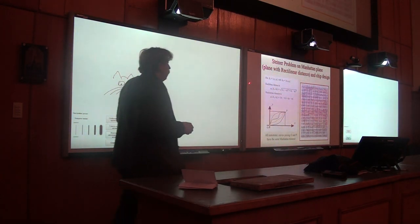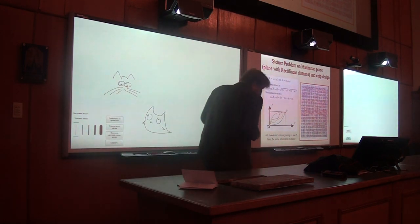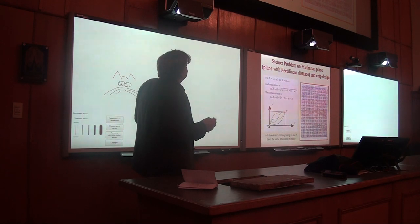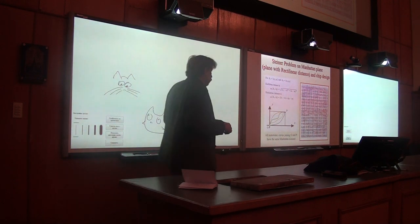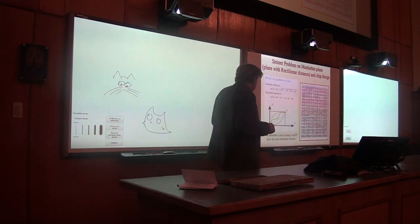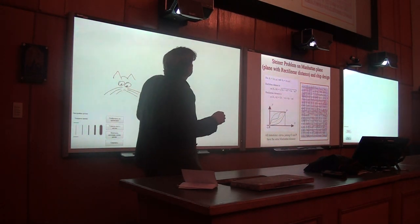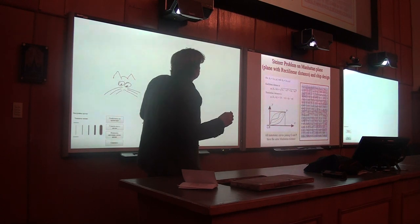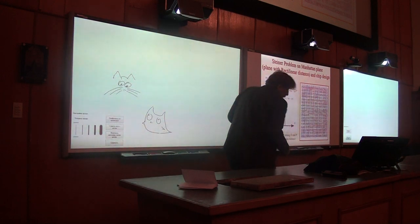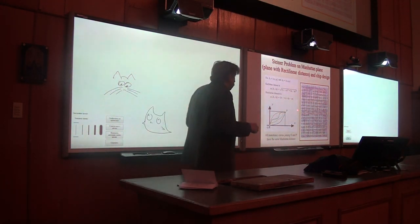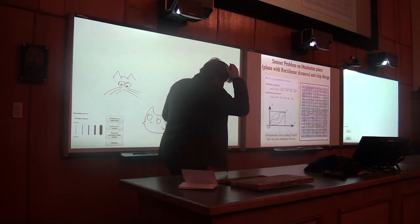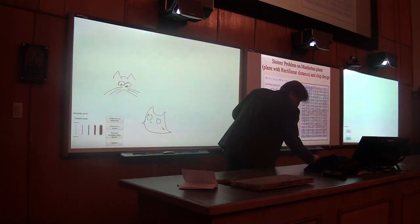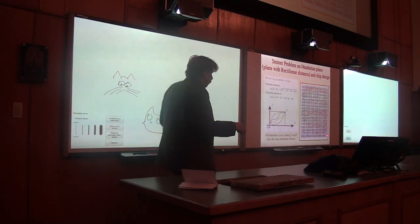Here is another application, namely if we change the way how we measure the distances between points and measure it with so-called rectilinear distance. Rectilinear distance is the distance between points which is measured along rectilinear polyline lines, that is, lines whose links are parallel to coordinate axes. Mathematically it can be written as the sum of absolute values of coordinate differences. This distance is useful in chip design because the wires in chips are usually positioned parallel to coordinate axes.